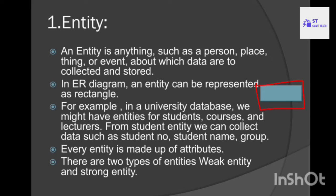For a student entity, we can collect data such as student number, student name, and group. Student number, student name, and group are the properties of the student entity. Every entity is made up of attributes. There are two types of entities: weak entity and strong entity. I will discuss this topic in a separate video.